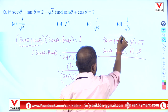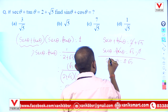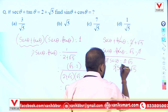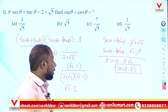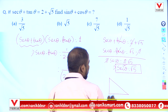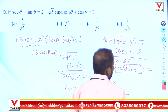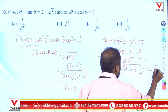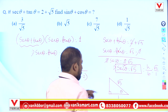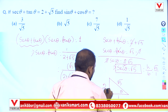Adding the two equations, the tan θ terms cancel and 2 sec θ = 2√5, so sec θ = √5. Now use a triangle: sec θ = h/b = √5/1, so hypotenuse is √5 and base is 1. The perpendicular is √(√5² - 1²) = √(5 - 1) = √4 = 2.